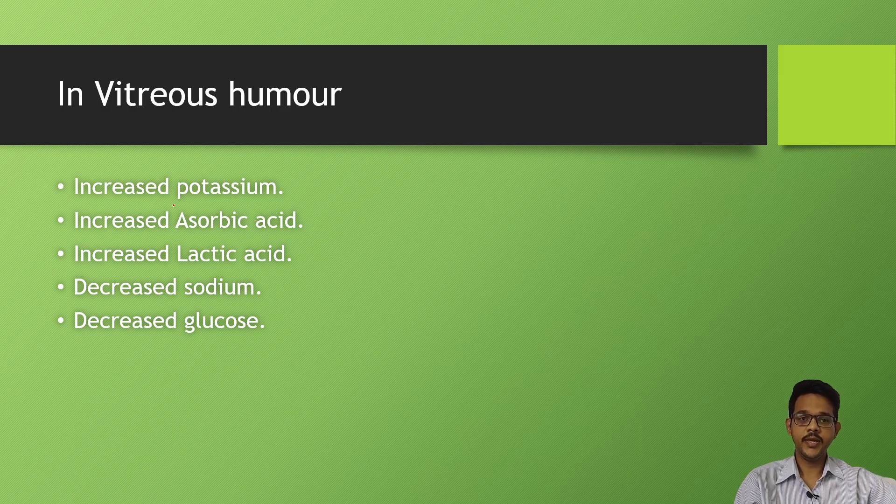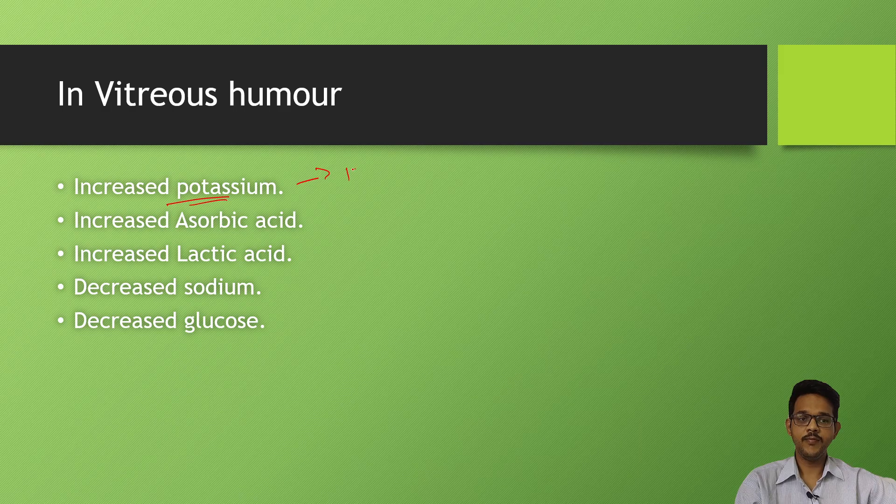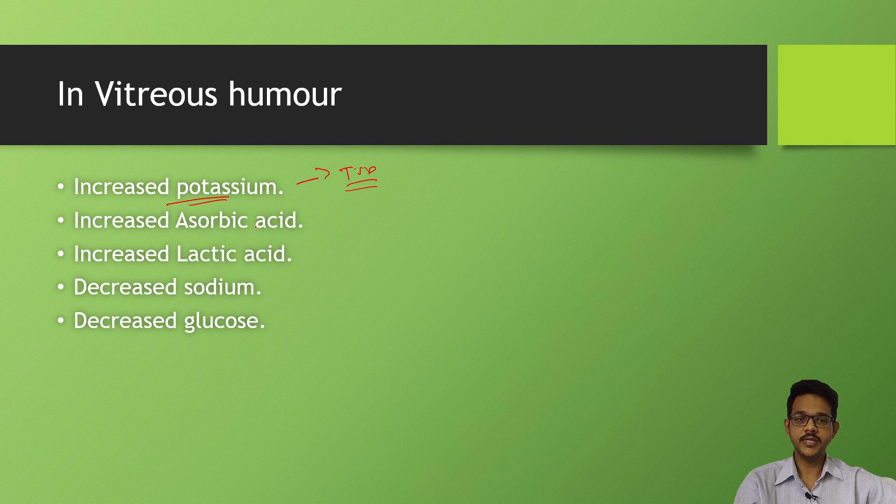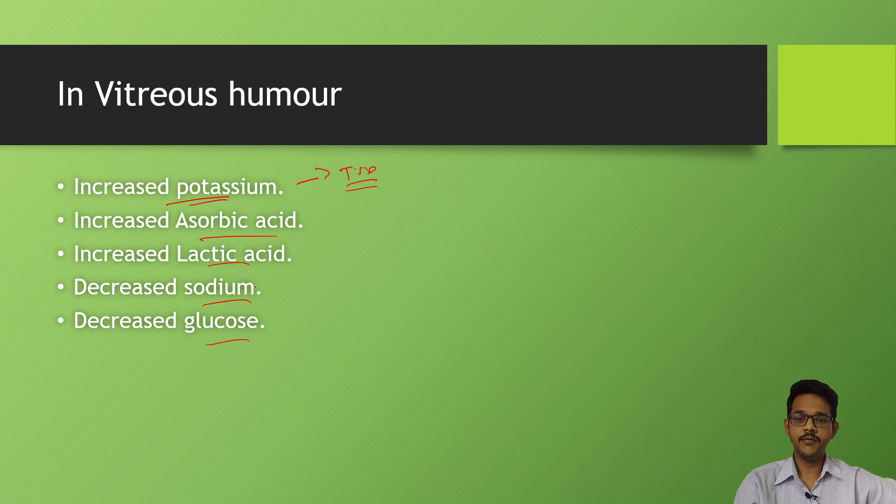In vitreous humor, there is increase in potassium. This is very helpful for time since death, since it can be a very reliable method for estimation of time since death - that is increase in potassium. Then there is increase in ascorbic acid and lactic acid, but decrease in sodium and glucose in the vitreous humor in the eye.